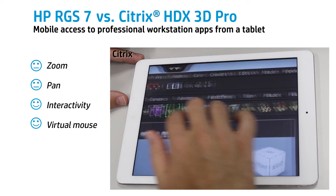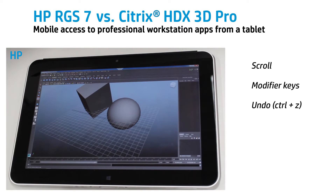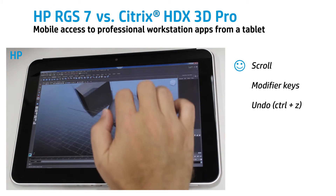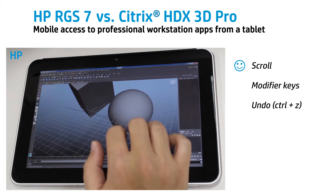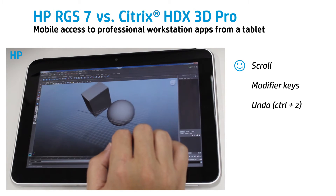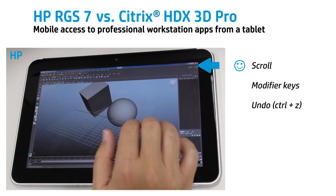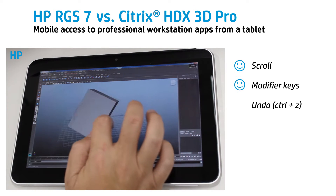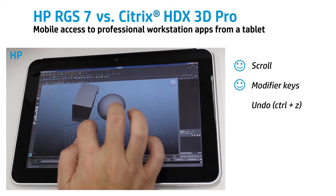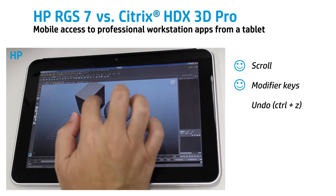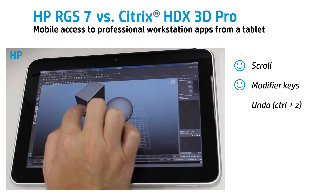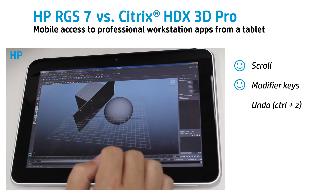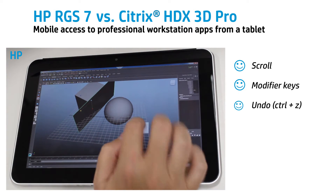Most 3D applications use the mouse's scroll wheel for things like zooming. RGS does this with a three-finger swipe. Modifier keys like Alt are frequently used with mouse clicks for things like rotating 3D models; with RGS, a simple tap can hold down Alt for you. Most of us make frequent use of the undo shortcut Ctrl-Z, and loss of this could greatly reduce the usefulness of a tablet. In RGS, a quick tap, press, or swipe can get you back on track.